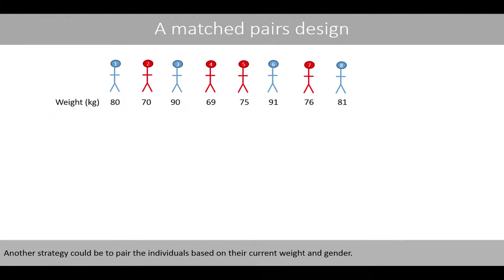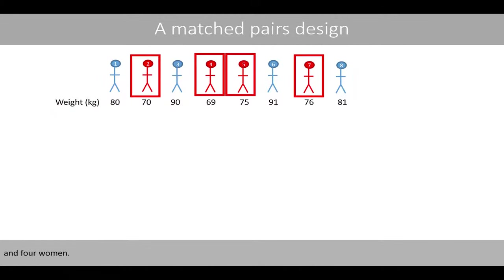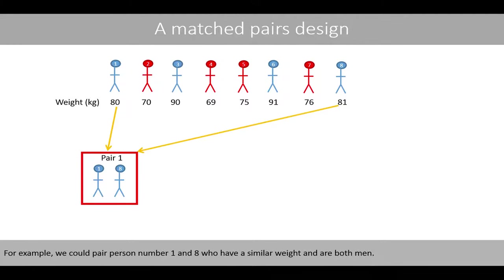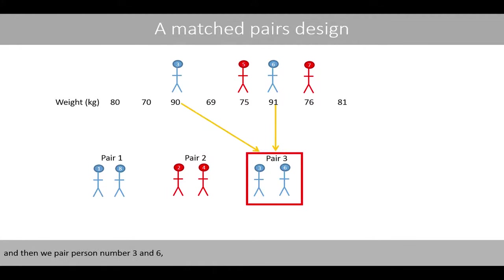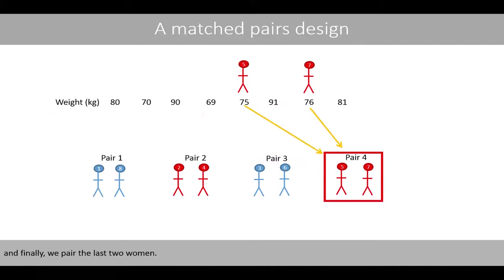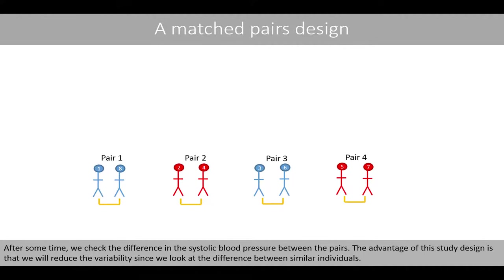Another strategy could be to pair the individuals based on their current weight and gender. For example, we could pair person 1 and 8, who have similar weight and are both men; pair person 2 and 4, who are both women with about the same weight; then pair persons 3 and 6; and finally pair the last two women. We could then randomly assign which person in each pair receives the drug treatment. After some time, we check the difference in systolic blood pressure between the pairs. The advantage of this design is that we reduce variability since we look at the difference between similar individuals.